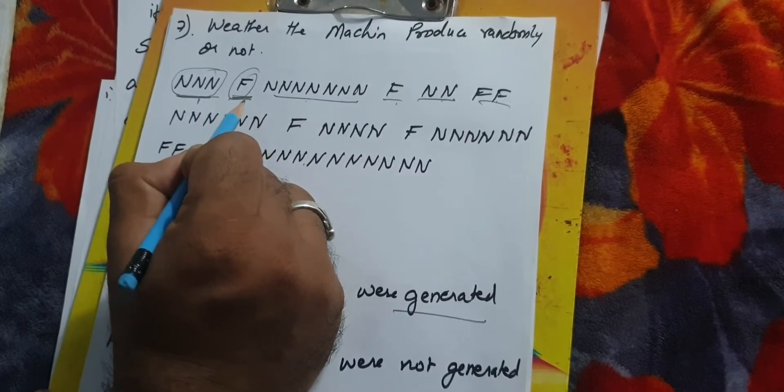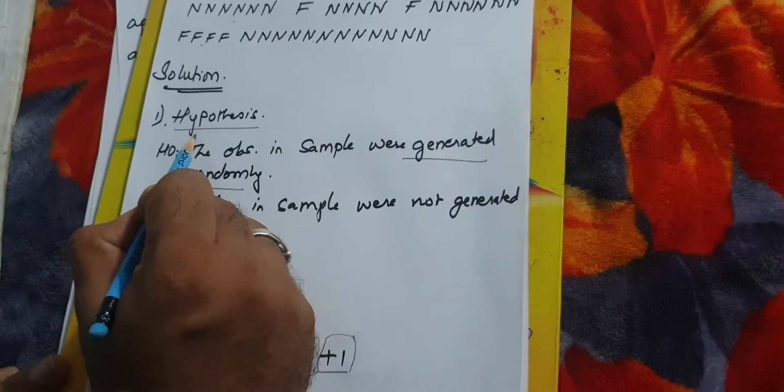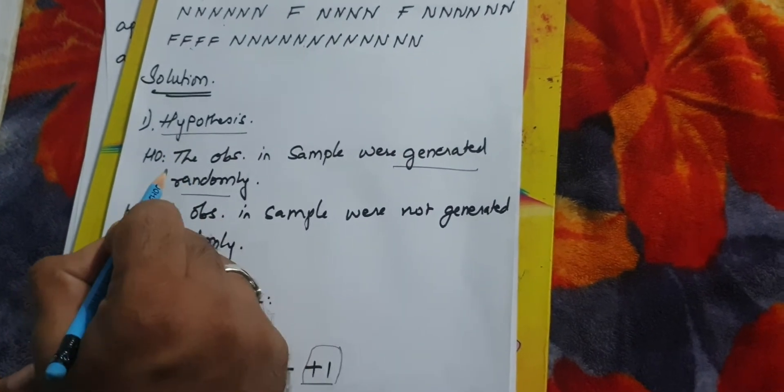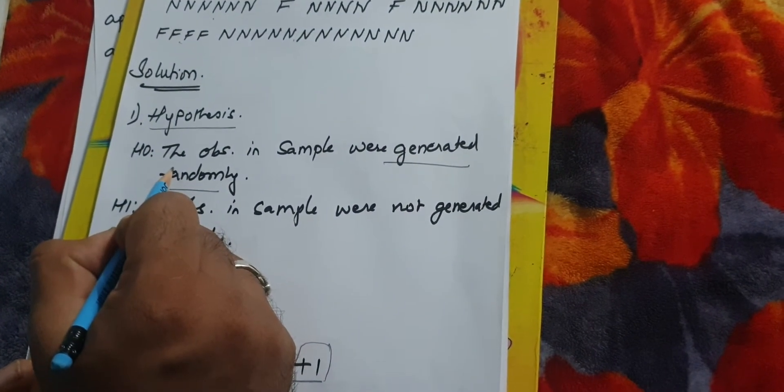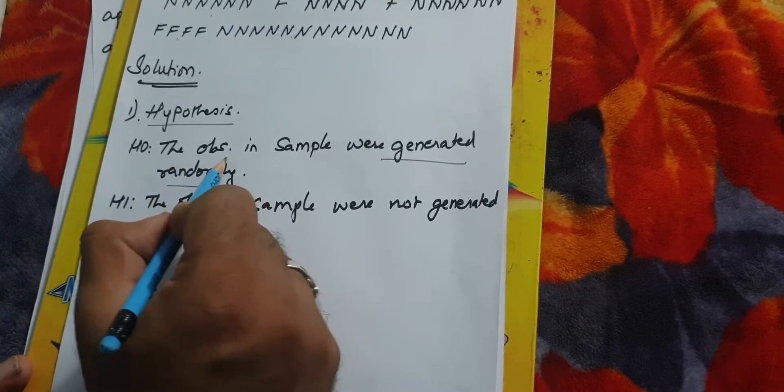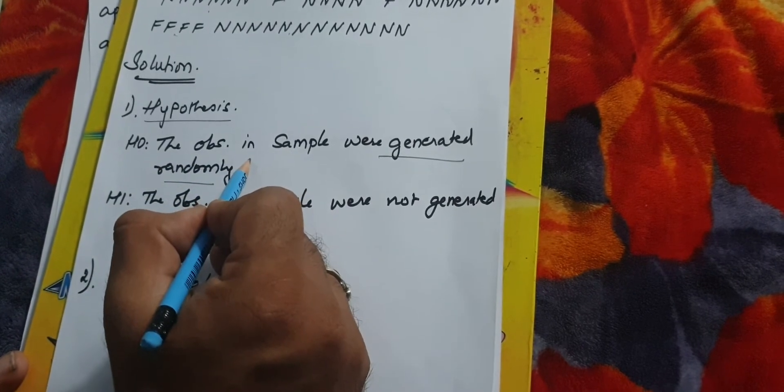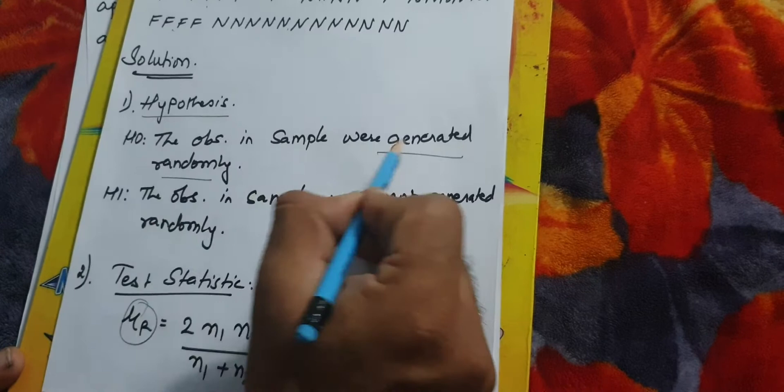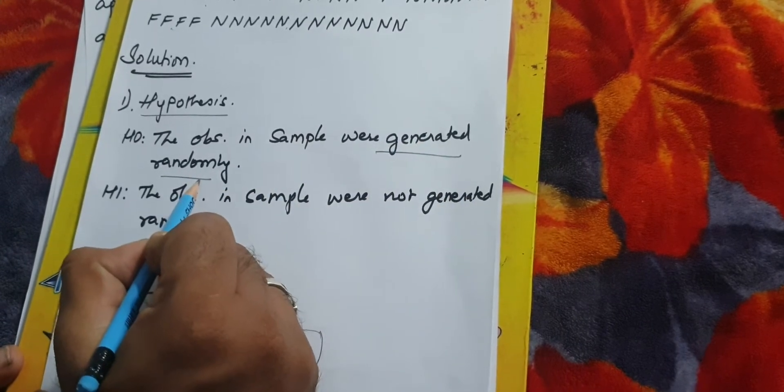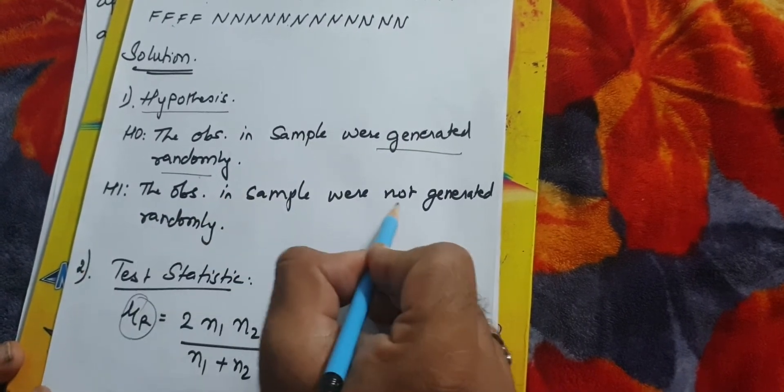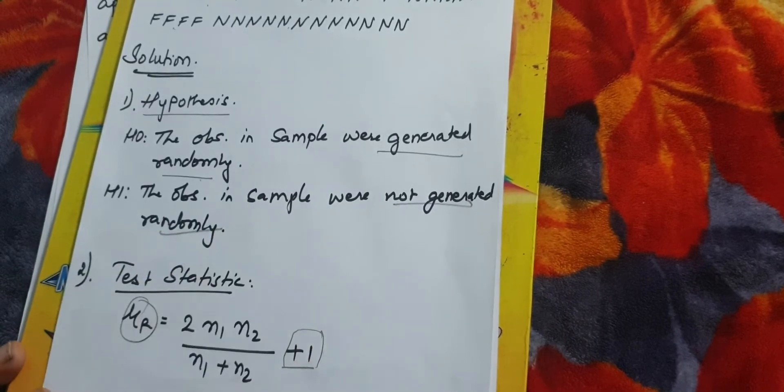The data was given here. N represents no flaw, F represents flaw. The first step is to hypothesize. Our null hypothesis is that the observations in the sample were generated randomly, whereas alternate says the sample was not generated randomly.